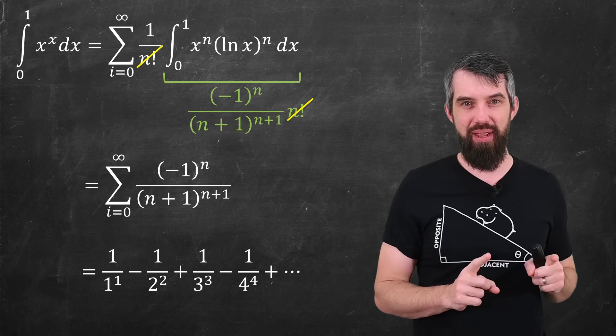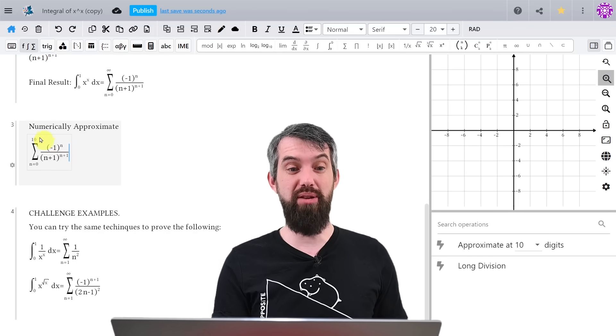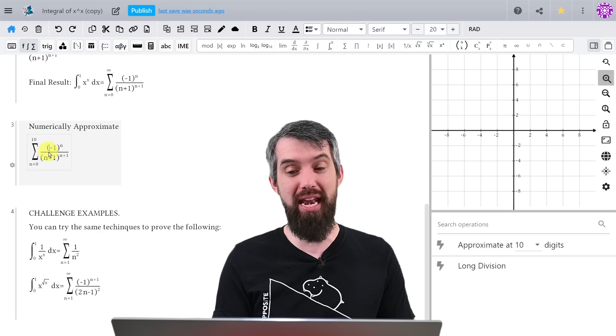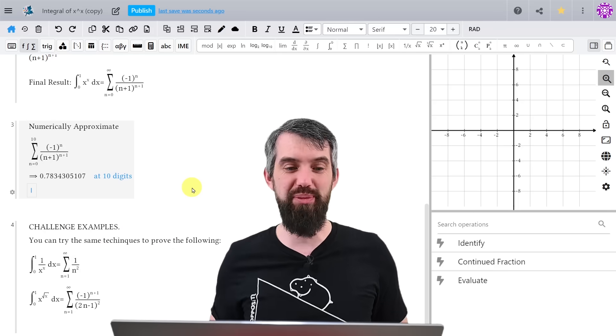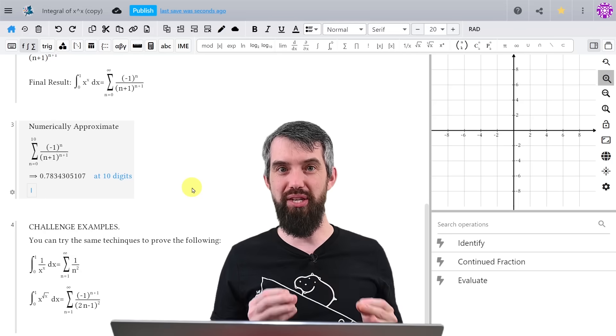Nevertheless, we have an answer. If you want to get an actual number out of this, you can come to the series and plug in anything that you like. For example, a maximum value of say 10. Then if I come down here and click approximate, it's going to give out some decimal 0.78 and so forth. That is our approximation for the value of this integral.